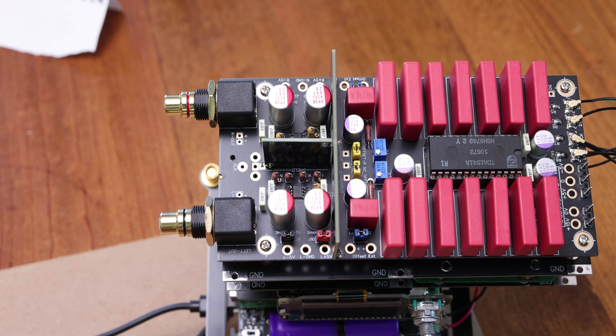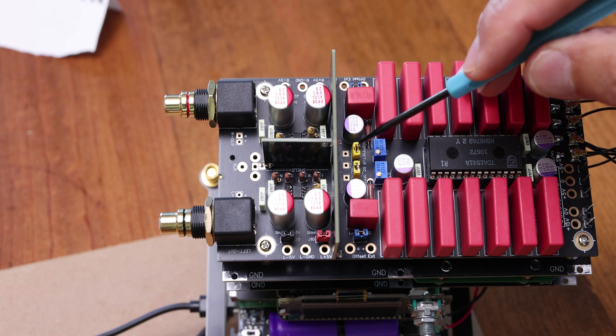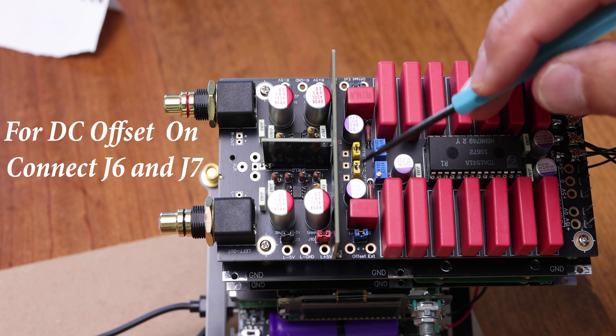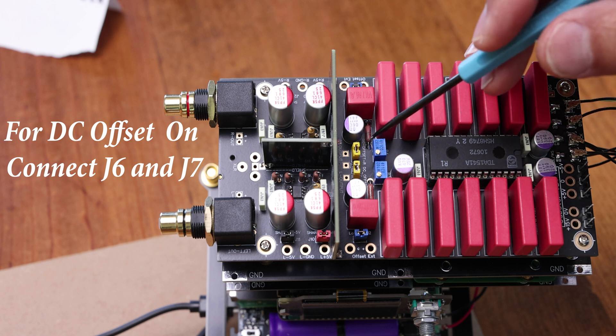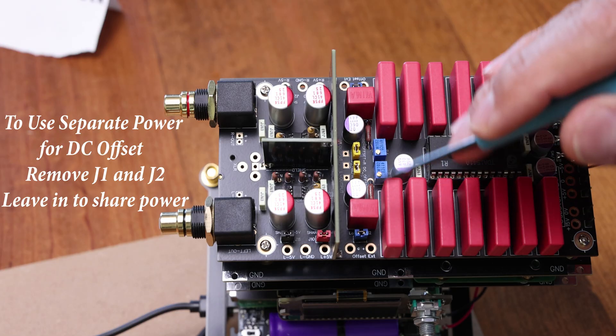Now, configuring all the jumpers, what do all the jumpers do? So let's start with these jumpers here. Those two here, if you want DC offset or not, if you don't want DC offset, you can take them off. This is in case you want to use a capacitor instead. This is J1 and J2.